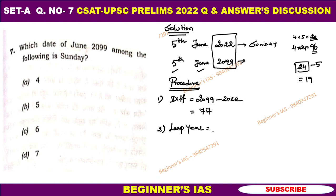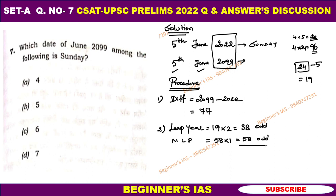If there are 19 leap years, a leap year contains 2 odd days. Therefore 19 × 2 = 38 odd days. For non-leap years: 77 minus 19 = 58 non-leap years, and 58 × 1 = 58 odd days. The total is 96 odd days.